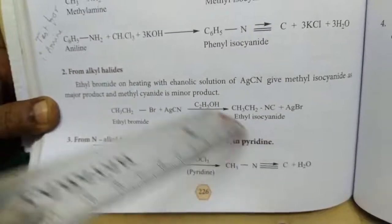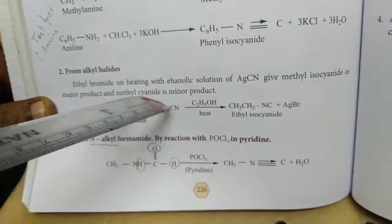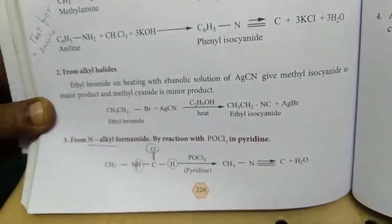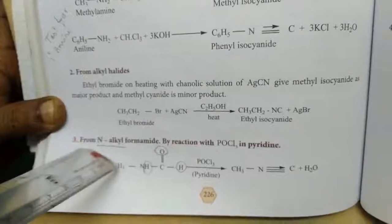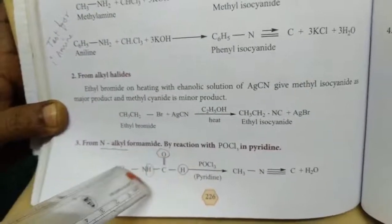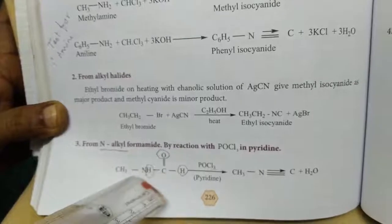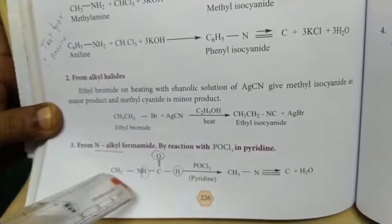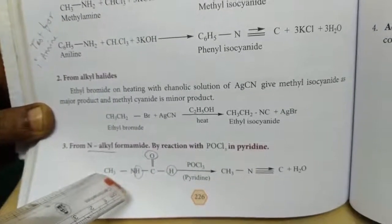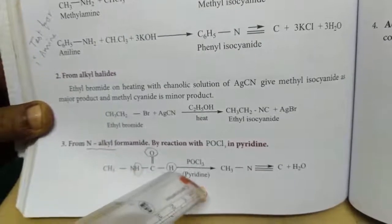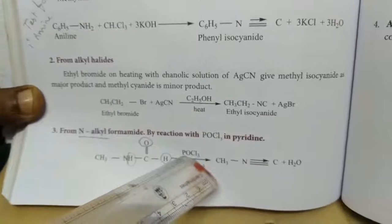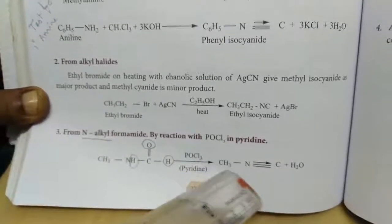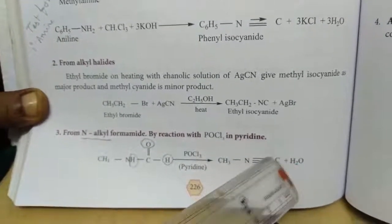From that method, only a very minor quantity of methyl cyanide is formed. Third method: from N-alkyl formamide — the formamide formula has H-CO with a methyl group replaced. N-alkyl formamide, when treated with phosphorus oxychloride (POCl3), gives methyl isocyanide and water.